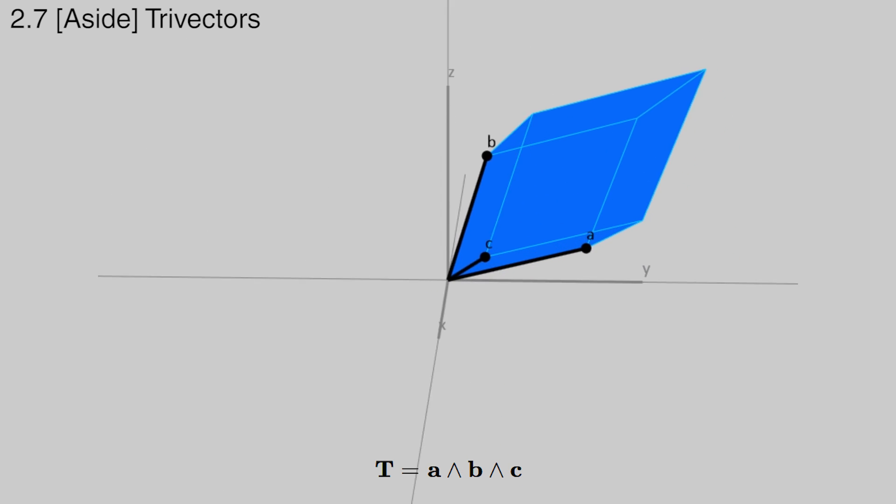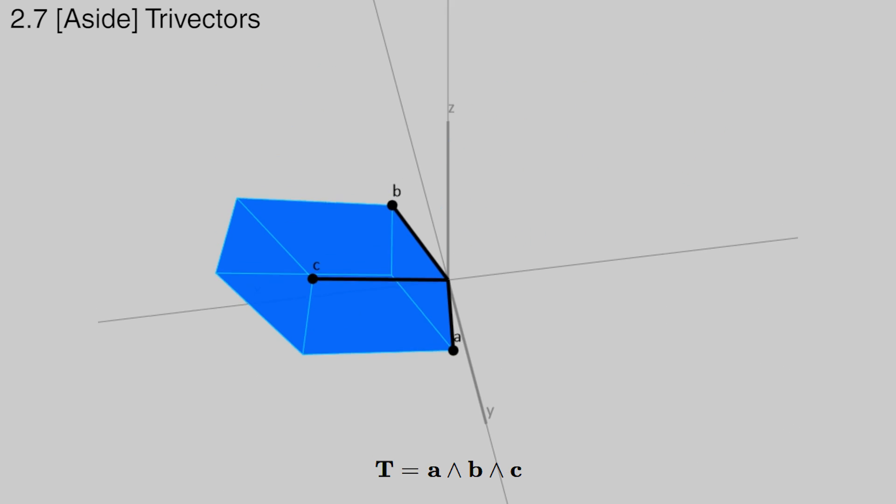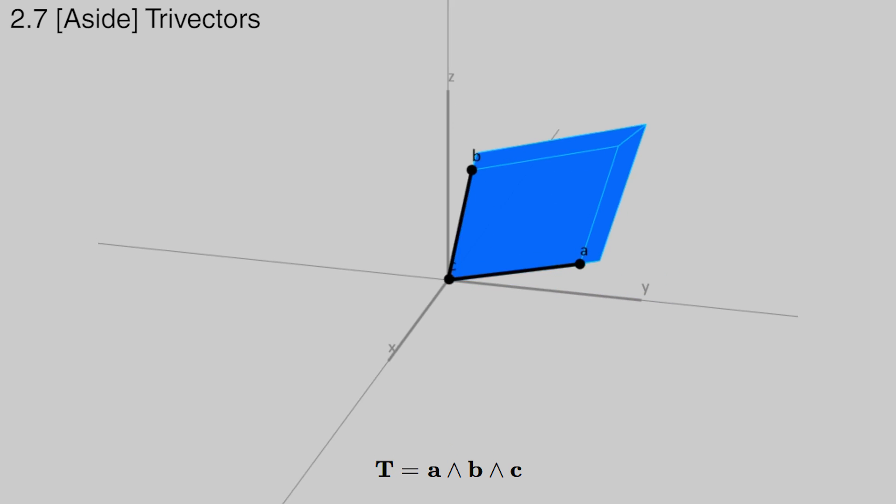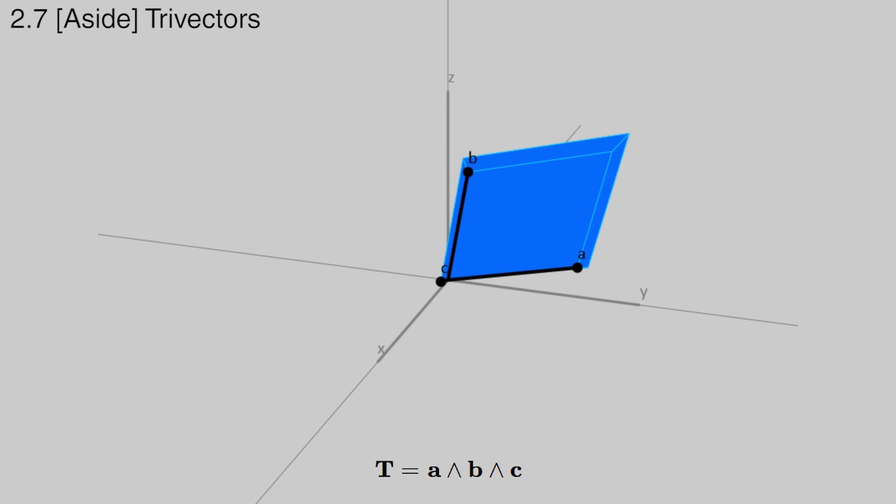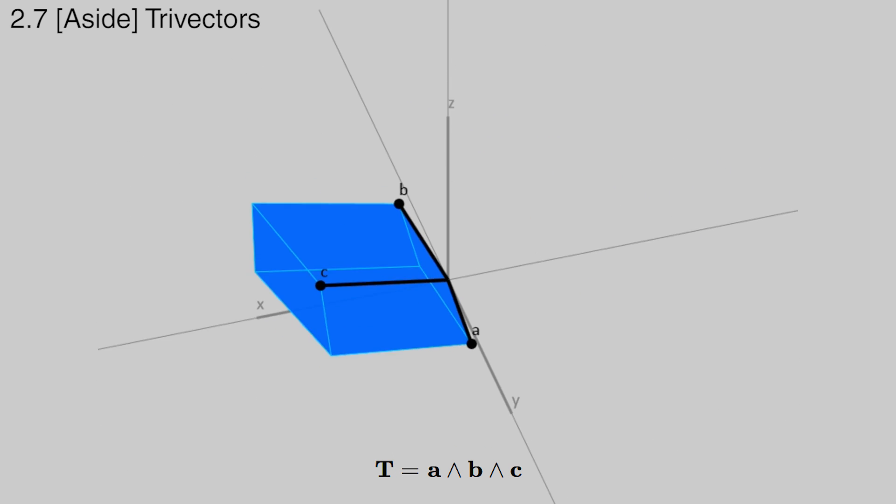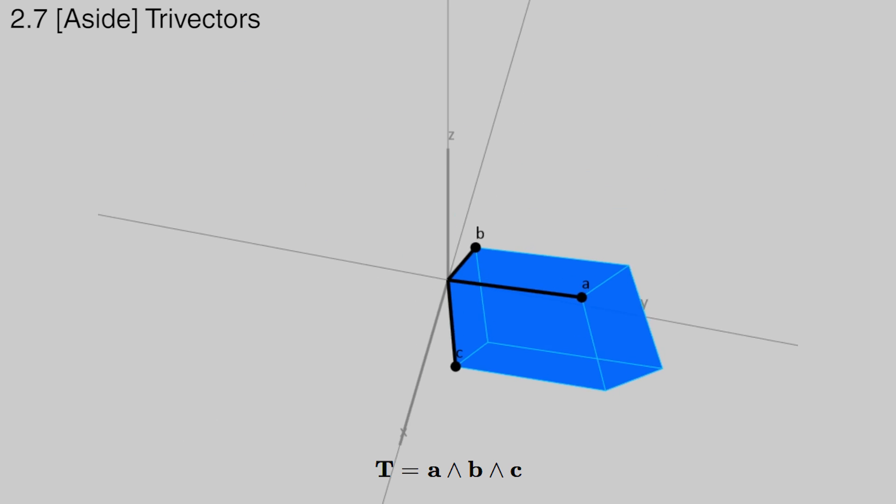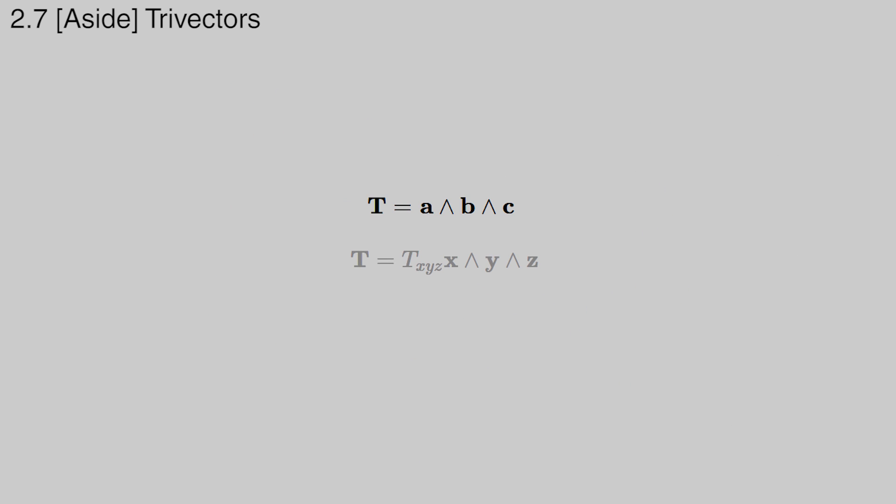We can keep taking the outer product to build not just oriented 2D areas, but oriented 3D volumes as well. A tri-vector T can be built by taking the outer product twice. In 3D, it stops there. Just like in 2D, there's only one plane which fills all of 2D space. In 3D, there's only one volume which fills all of 3D space. In 3D, a tri-vector only has one basis component, equal to the volume of the parallelepiped generated by the three vectors. The triple outer product is a better version of the scalar triple product, because it only involves one kind of operation, returns the correct type, volume instead of scalar, and works in any number of dimensions.